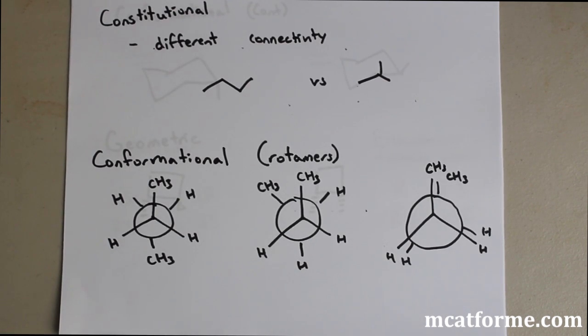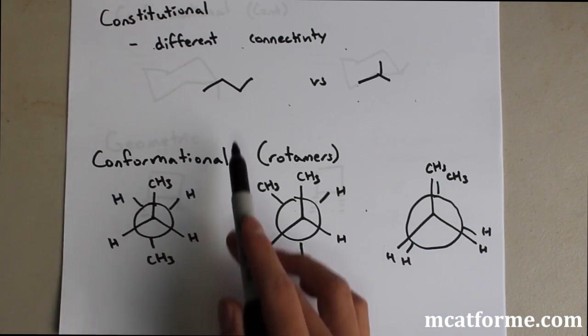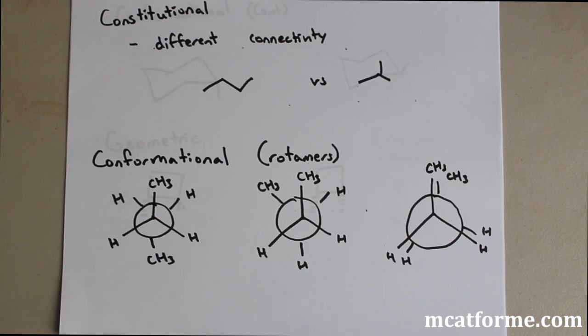So the first thing we're going to be doing is constitutional isomers. Constitutional isomers are probably what we're most familiar with. They're the same chemical formula, and just to let you know, all isomers have the same chemical formula but are oriented in a different way. And constitutional isomers have different connectivity. So for example, this one is going to be butane, this is going to be isobutane, but they still have the same chemical formula, just different connections.